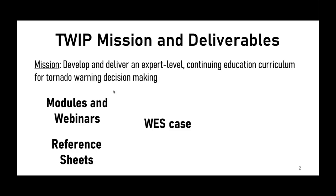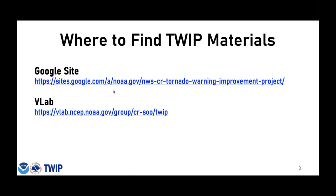In support of this mission, the TWIP has produced many different deliverables that can be used at various stages of training and continuing education. These include several modules and webinars, separate curricula specifically for QLCS versus supercells, and reference sheets that can be used as a quick refresher.